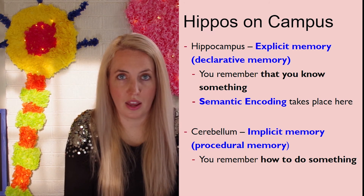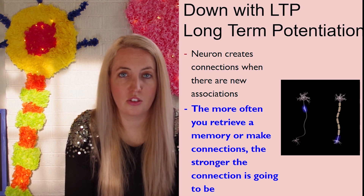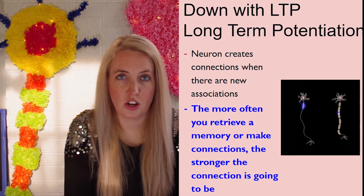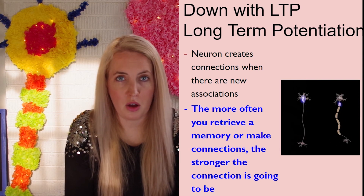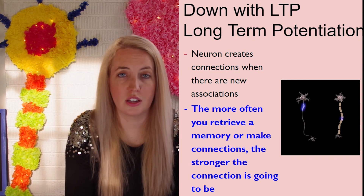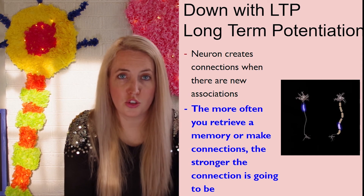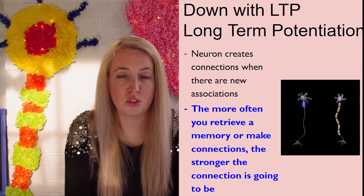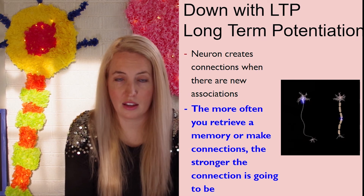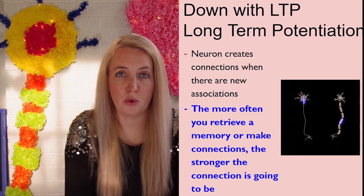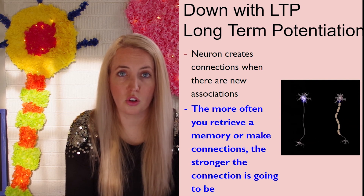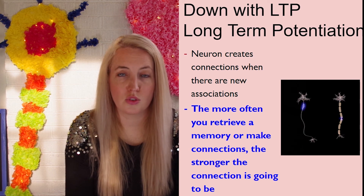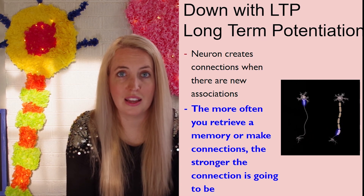Going deeper to the level of neurons, we can see traces of memory there too. Long-term potentiation, or LTP, tells us that the more we do things, the stronger the neural connections in our brain become, making memory faster and easier. When you learn something new, a new neural connection is formed. The more you use and practice it, the stronger it becomes — until it becomes so ingrained that it's automatic, like muscle memory in sports.